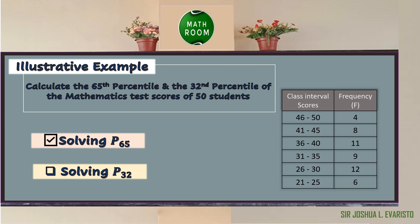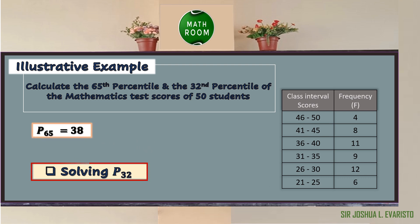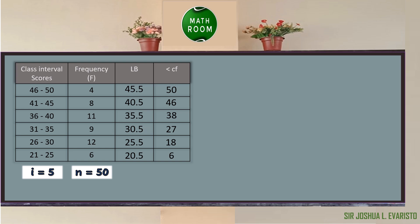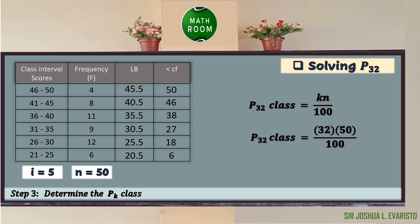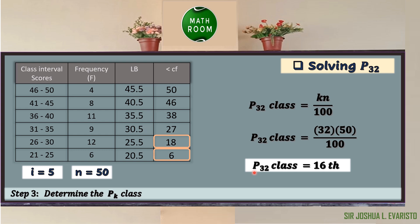After solving for P65, let us proceed to solve the 32nd percentile, P sub 32. Since we already identified the lower boundary and less-than cumulative frequency, we proceed directly to step three: determine the P sub k class. P sub 32 class equals 32 times 50 over 100. 32 times 50 equals 1600 divided by 100, which gives 16. Since 16 is between 6 and 18, we choose the higher value, 18. Hence, the P sub 32 class is found in the second class.